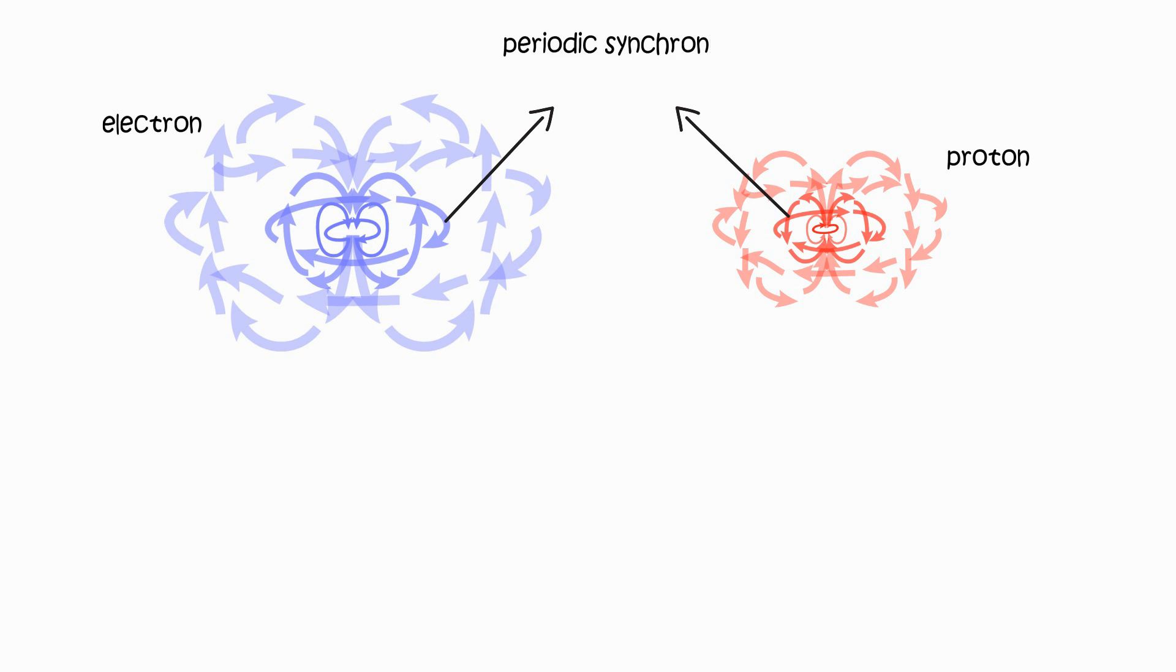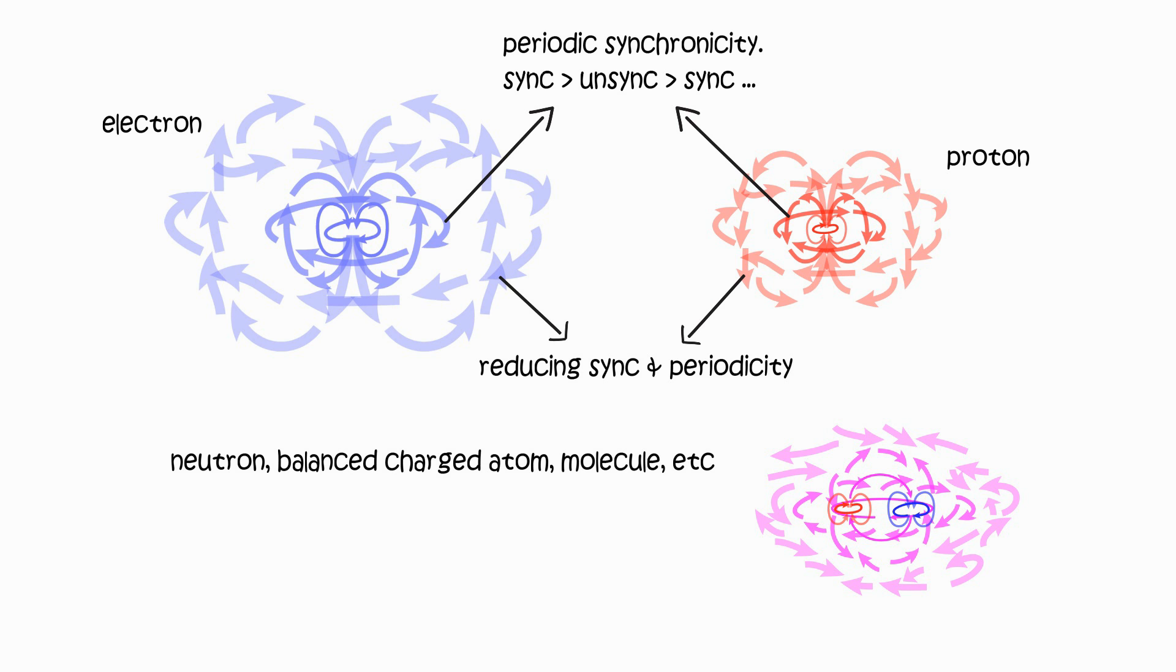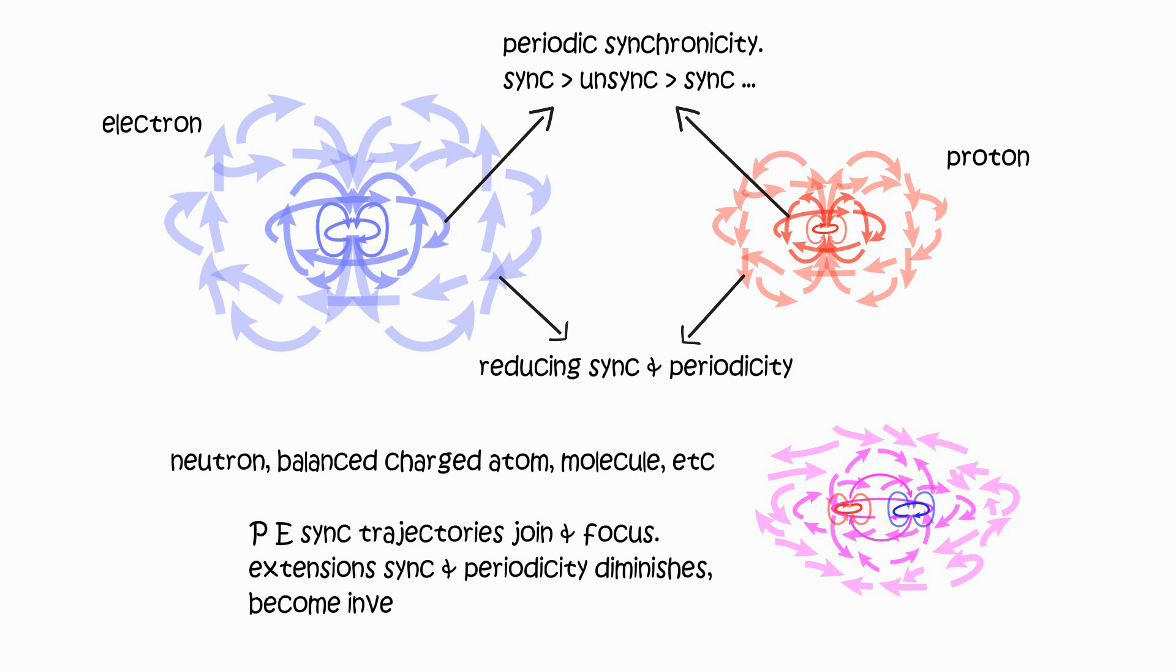Unconserved charge generates synchronized extensions. That is how it attracts opposite charge. Conserved charge generates unsynchronized extensions. Unsynchronized extensions are neutralized trajectories and diminishing nodes. Matter and anti-matter unsynchronize entire configurations, conserving charge conclusively.